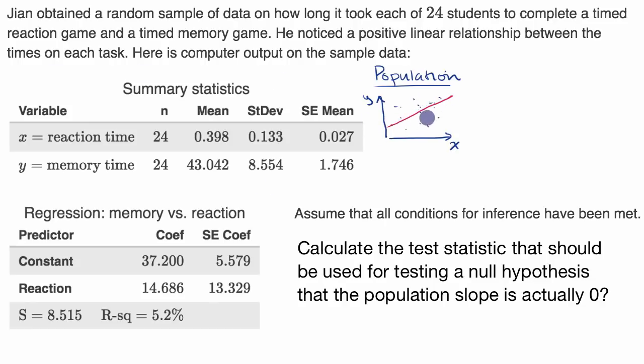You could describe that regression line as y hat is equal to some true population parameter, which would be this y-intercept, so we could call that alpha, plus some true population parameter that would be the slope of this regression line, we could call that beta, times x.